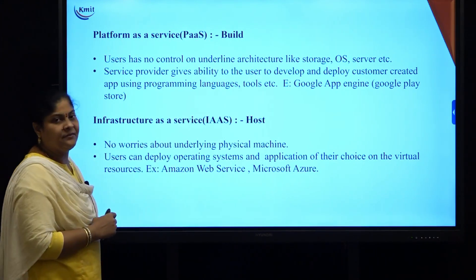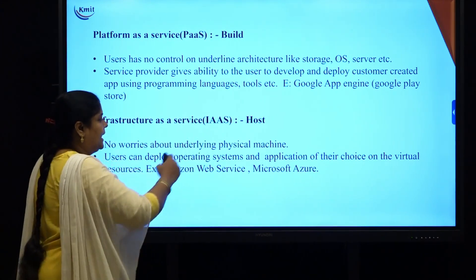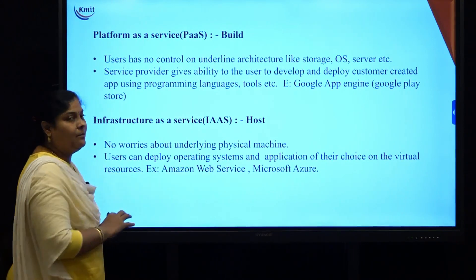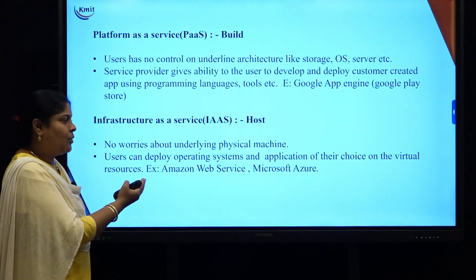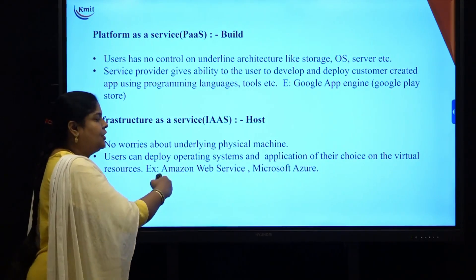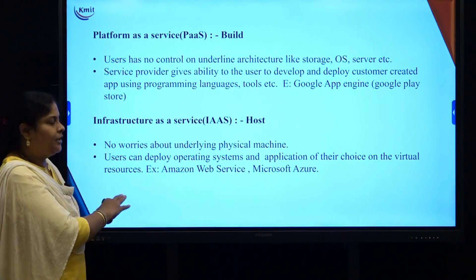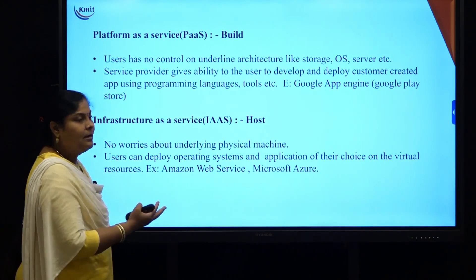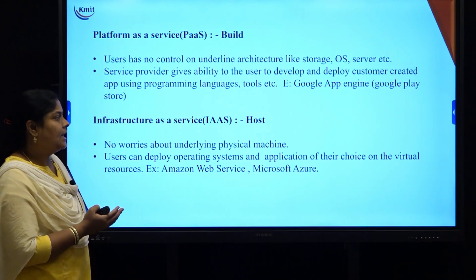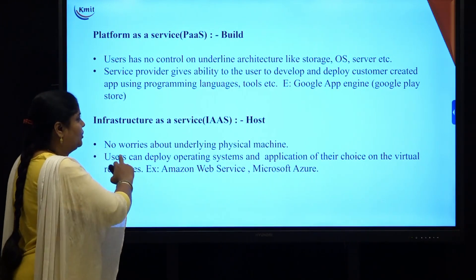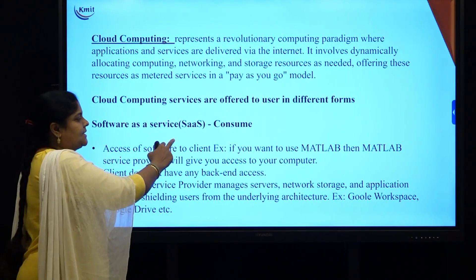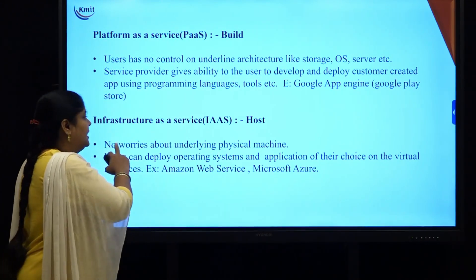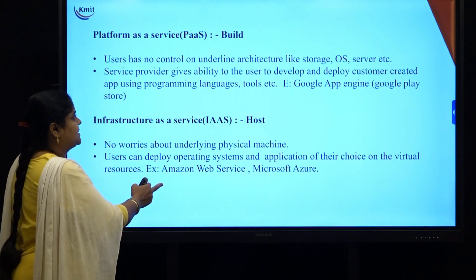Next is infrastructure as a service, also called IaaS. The user does not need to worry about the physical machine; whatever applications they want to develop, they can do it on virtual resources — on a virtual machine like Amazon Web Services or Microsoft Azure. To summarize: if the user wants to consume something, use software as a service; if the user wants to build something, use platform as a service; if the user wants to host an application, use infrastructure as a service.